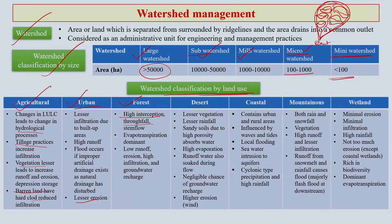In desert areas we can have another class of watershed, characterized by lesser vegetation, lesser rainfall, sandy soils, high evaporation, and runoff water that soaks during flow. There is negligible chance of groundwater recharge in desert areas, and higher erosion occurs because of wind, which carries off the topsoil most of the time.